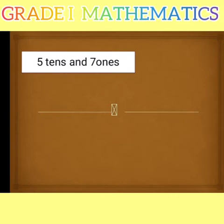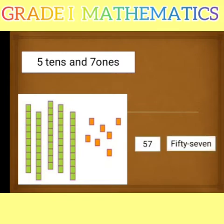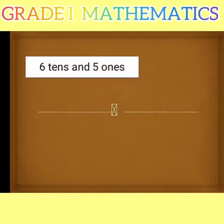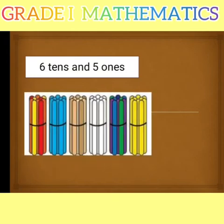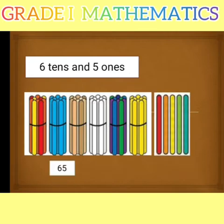Next one is 5 tens and 7 ones. So it's 57. Spelling is F-I-F-T-Y S-E-V-E-N, 57. Here you can see 6 tens are there means that is 60 and 5 ones. So it is 65. Spelling is S-I-X-T-Y F-I-V-E, 65.